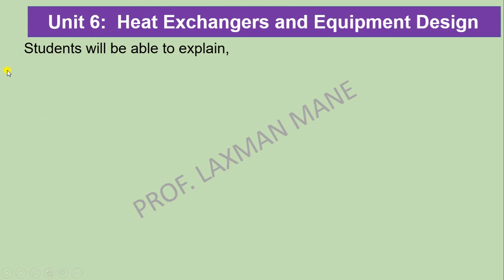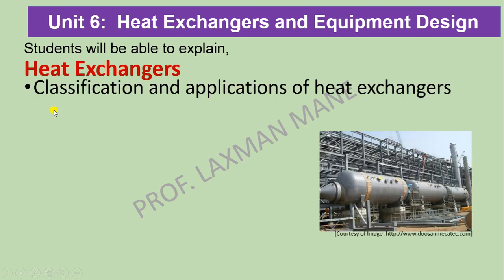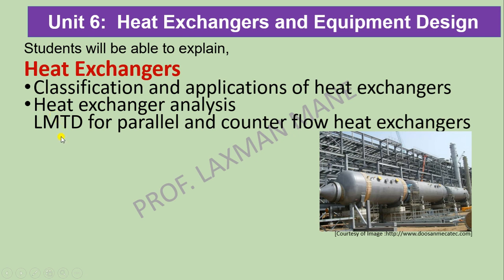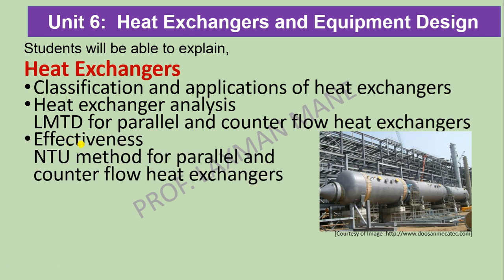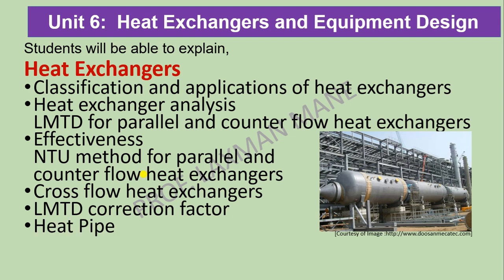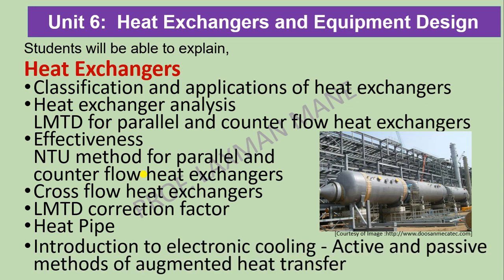Unit number six is heat exchangers and equipment design. In this unit you will be able to explain heat exchangers, covering classification and applications. Analysis of heat exchangers includes LMTD — logarithmic mean temperature difference — for parallel and counter flow arrangements, and the effectiveness by using the NTU method — number of transfer units — for parallel and counter flow heat exchangers, cross flow heat exchangers, LMTD correction factor, heat pipe, and introduction to electronic cooling with active and passive methods of augmented heat transfer.